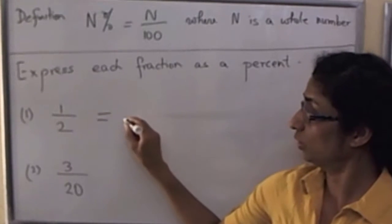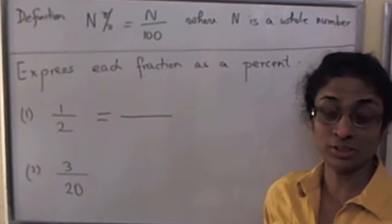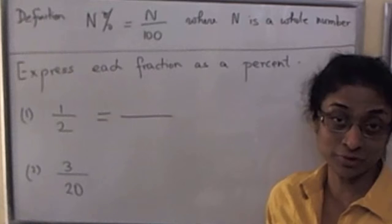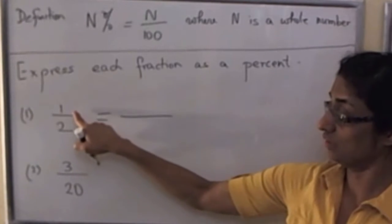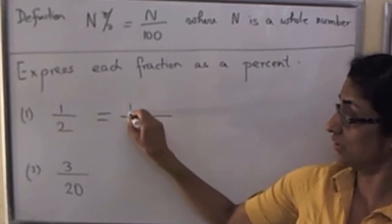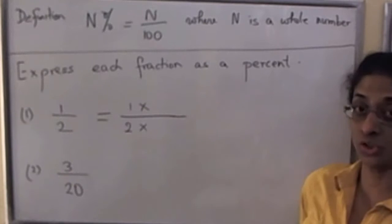However, this is what we can do with 1 over 2. Remembering FFEF, or fundamental fact about equivalent fractions, which we discussed in another video, we know that this fraction is unchanged if we multiply the numerator and denominator by some same non-zero whole number.